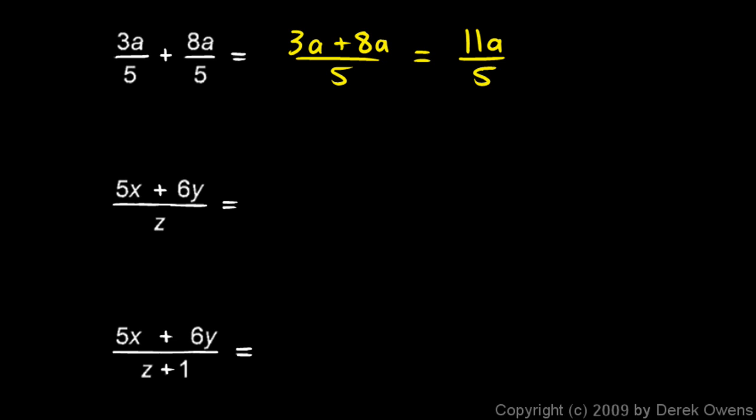Now a fraction with two terms in the numerator, like we see here - this plus that all over z - a fraction like this can be split into two fractions. 5x plus 6y all over z could be split up like this: 5x over z plus 6y over z. This is conceptually the same thing as the examples we've been doing earlier, just in reverse.